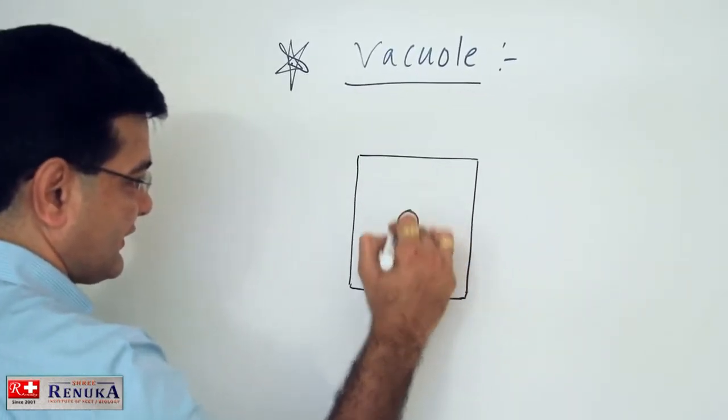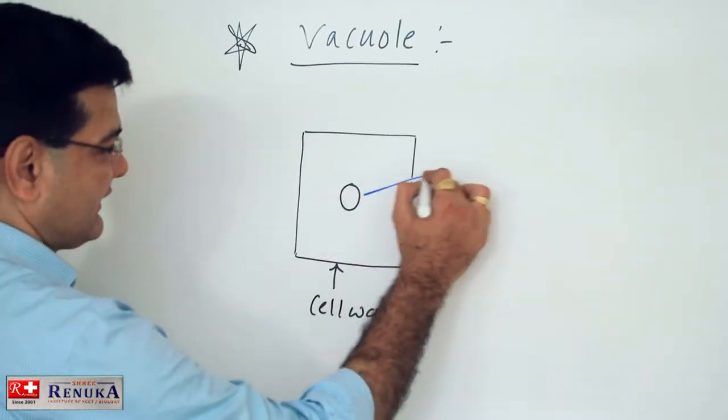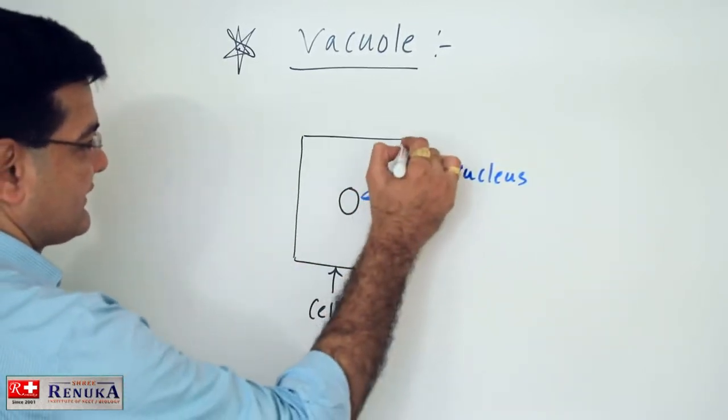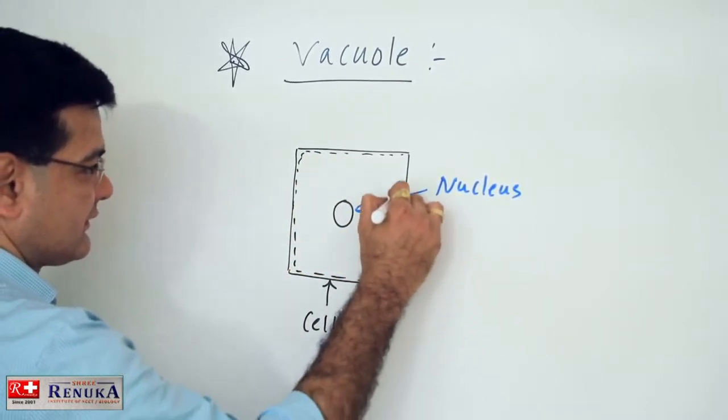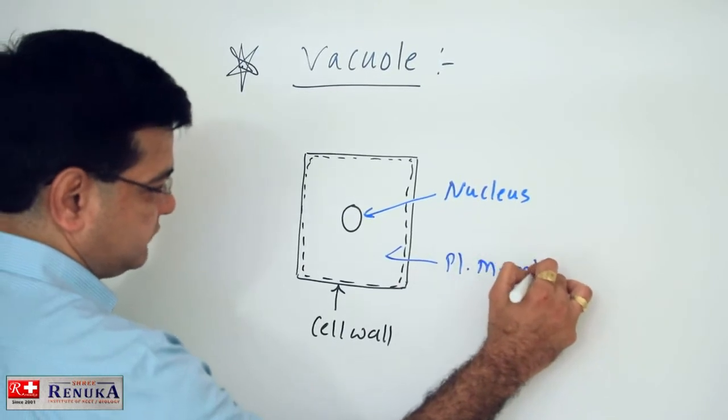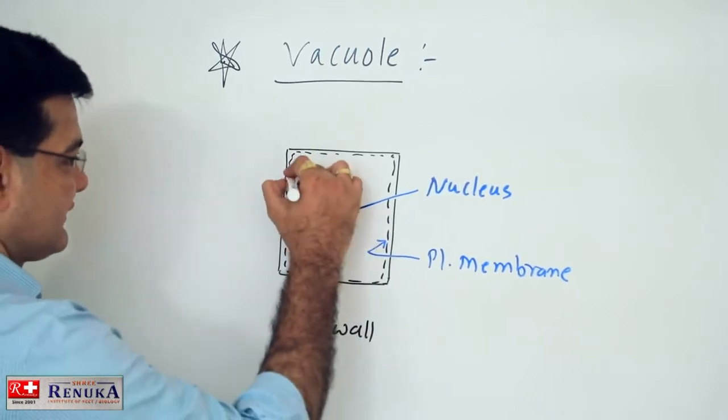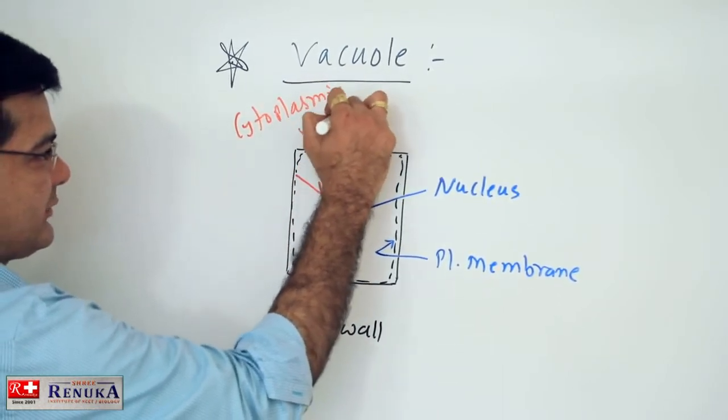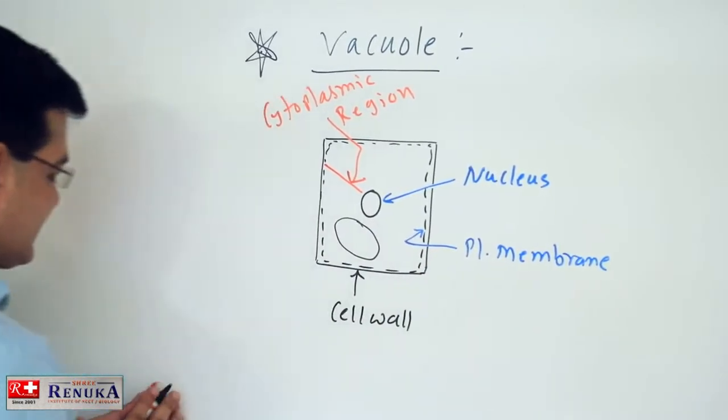Vacuole is found in plant cells. The outermost layer is the cell wall. Inside the cell, the nucleus is present, inner to the cell wall. This is the plasma membrane, and inside this cytoplasmic region, the vacuole is present. This is vacuole.